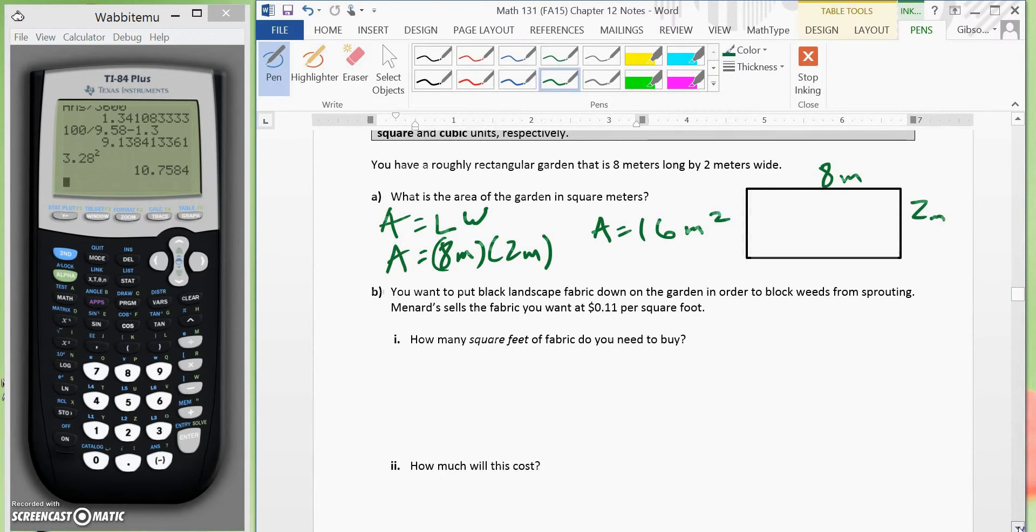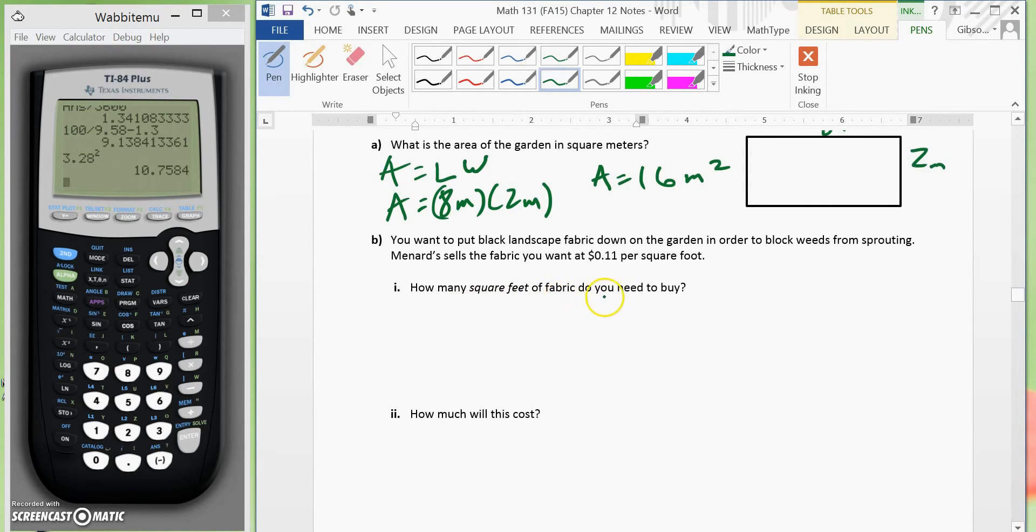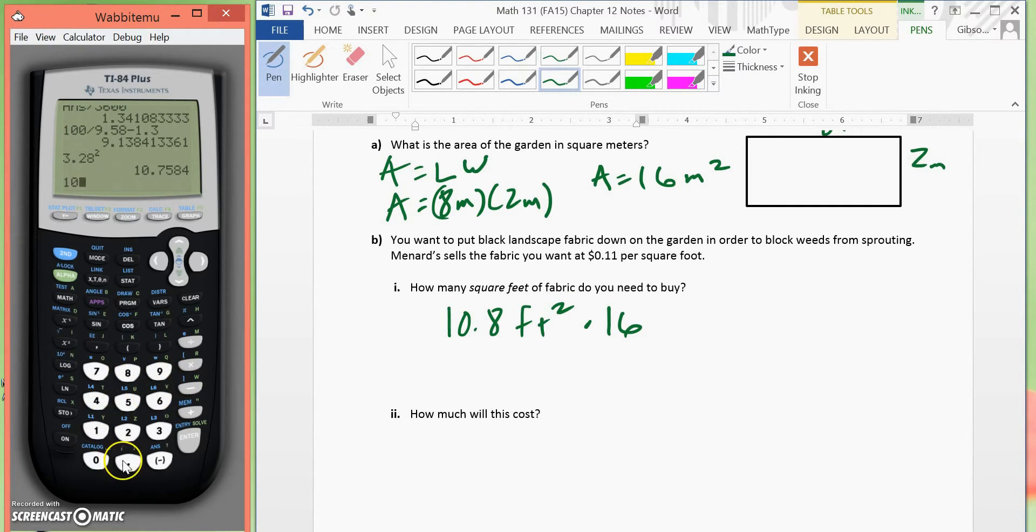Okay, so, now, it says, how many square feet of fabric do you need to buy? So, we know we have 10.8 square feet is equal to 1 square meter. So, we would have to multiply that by 16. So, we would take this 10.8 times 16 to see how many square meters we have.